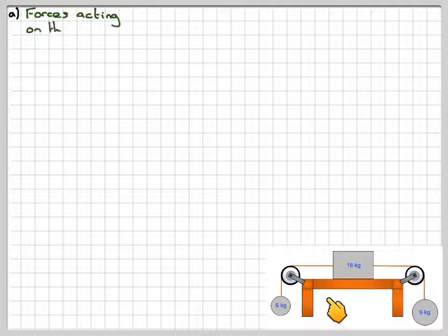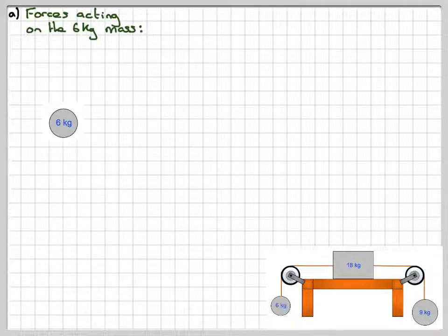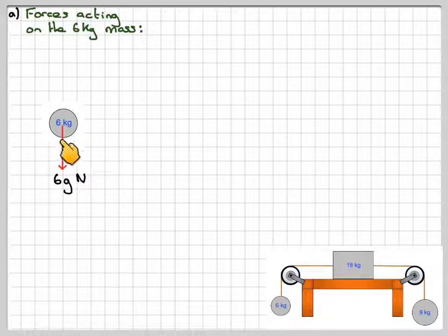So here's a diagram of the situation. The forces acting on the 6 kilogram mass: we've got the weight of the 6 kilogram mass, which is 6G Newtons, and then we've got the tension here of that string. So we're going to call that T1N.